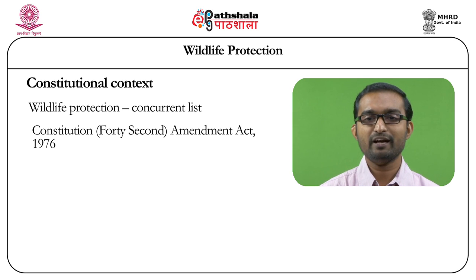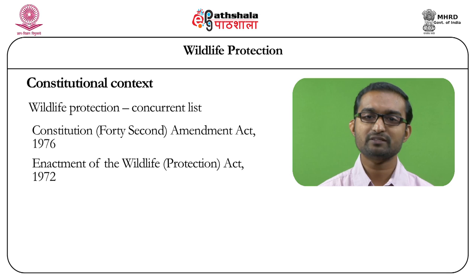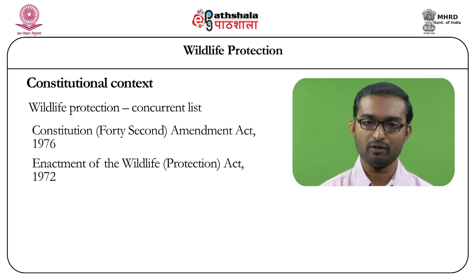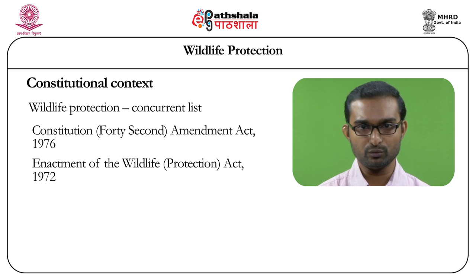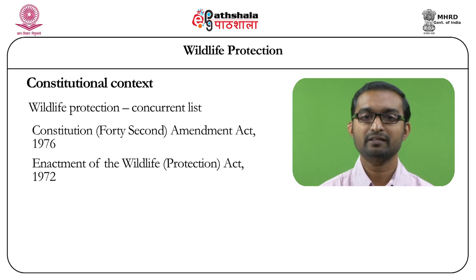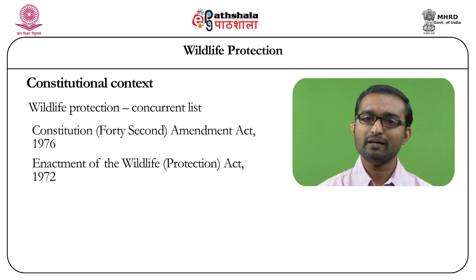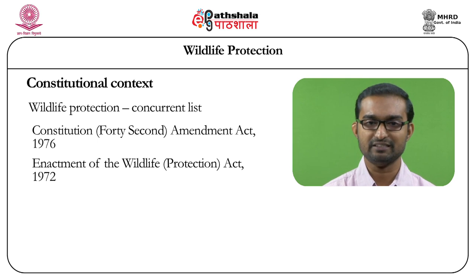However, the Wildlife Protection Act was enacted in 1972, before the 1976 amendment, when wildlife was still in the State List — the exclusive domain of state legislatures. Yet the 1972 Act is a central legislation. Under Article 252 of the Constitution, any subject in the State List can be legislated upon by Parliament, provided two or more states have passed a resolution to that effect — meaning states can grant Parliament the power to enact such law. This is the provision through which the Wildlife Protection Act 1972 was passed by Parliament.